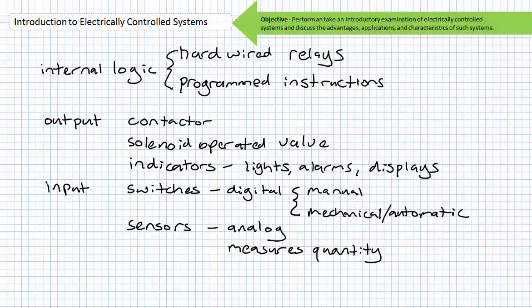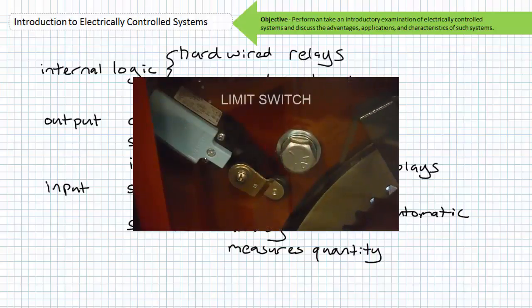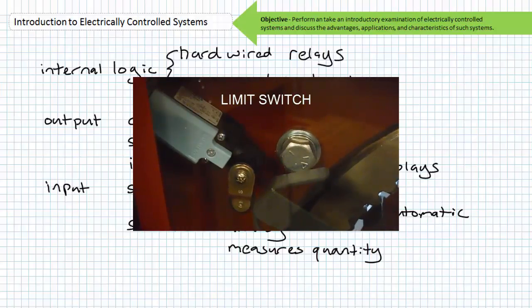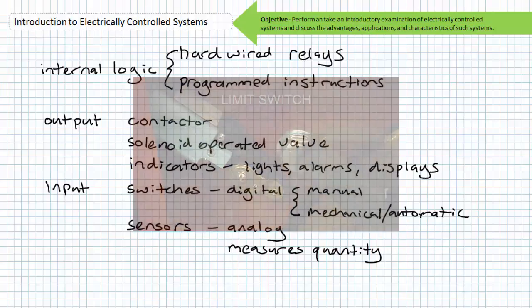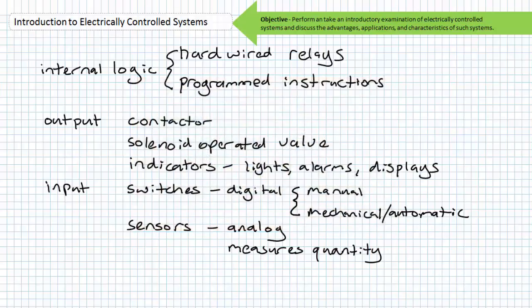A mechanical or automatic switch is a two-state switch that does not require human intervention to change states. An example would be a limit switch, a pressure switch, a float switch, a temperature switch, a magnetic proximity switch, or a rotational speed switch. Mechanical or automatic switches allow an electrically controlled system to function without human intervention.